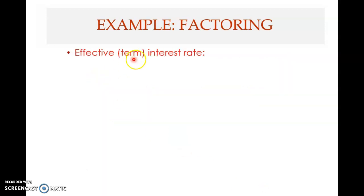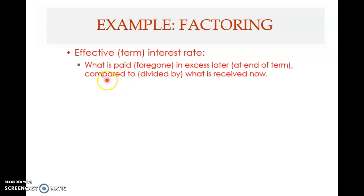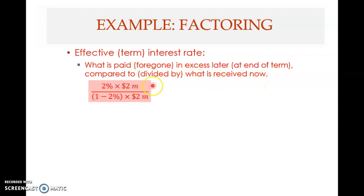The effective term interest rate for one month is what is foregone (excess cost) divided by what is received now. What you forego is the 2% factor discount on $2 million — you don't actually pay it, you give it up by selling the receivables to the factor at a discount.